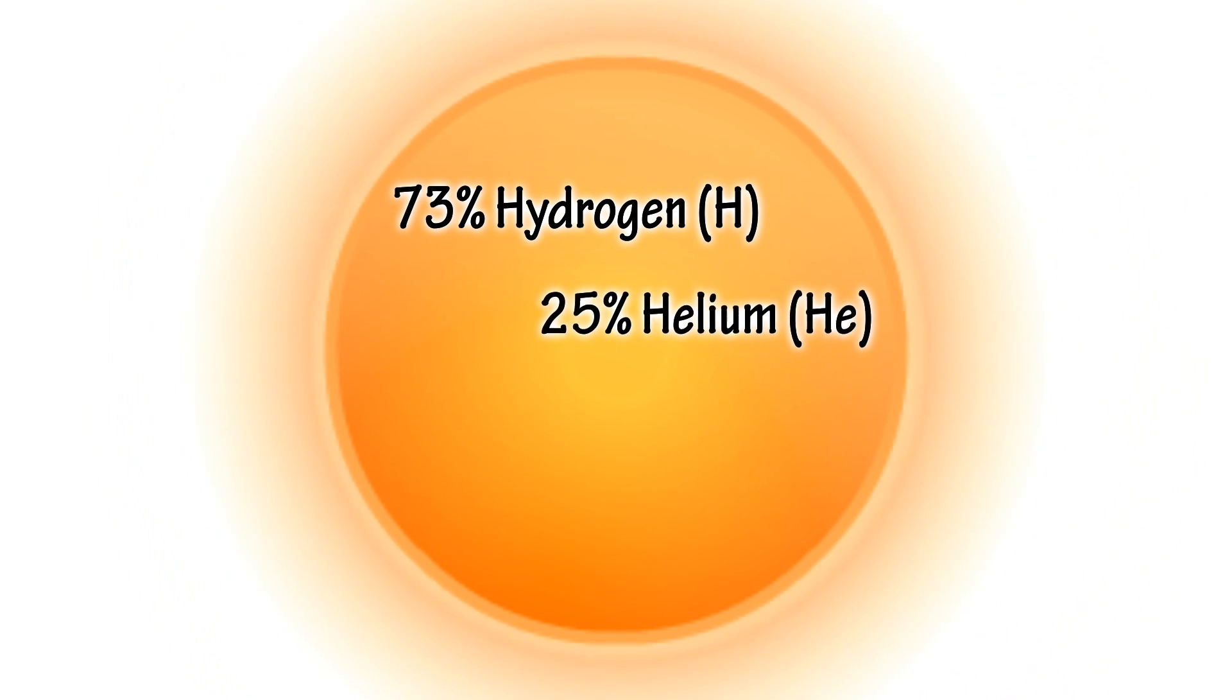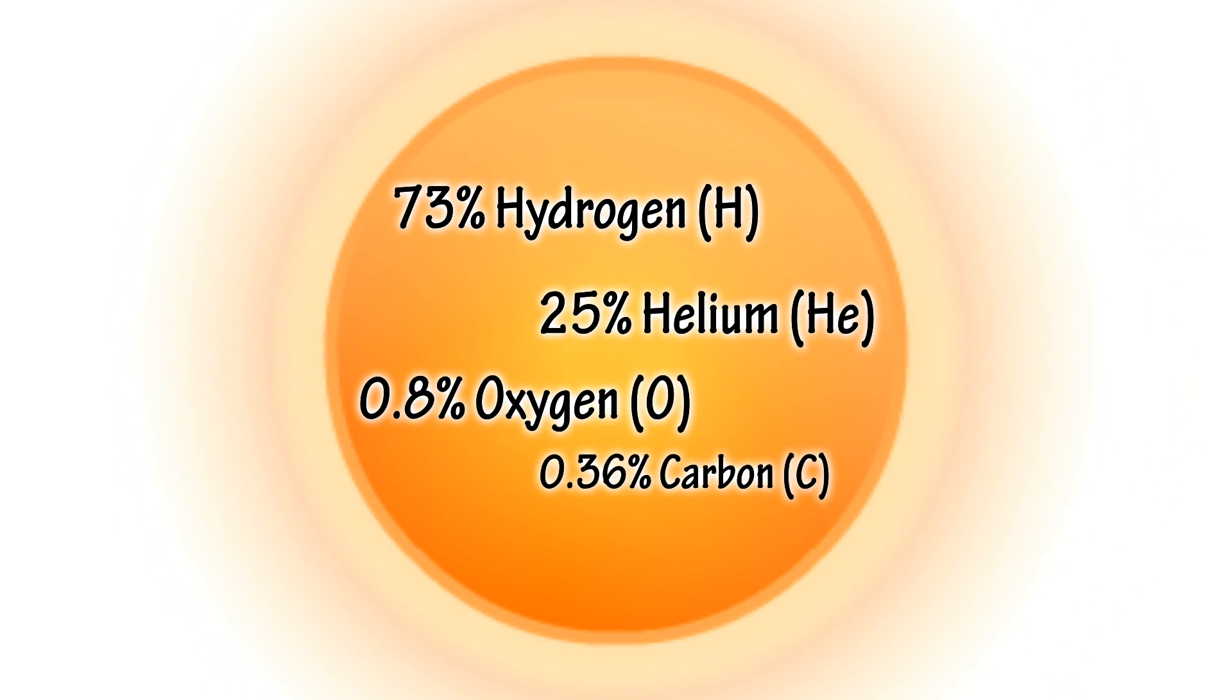Stars are made up of a number of different elements. The Sun is composed of about 73% hydrogen, 25% helium, 0.8% oxygen and 0.36% carbon, plus smaller amounts of other elements.